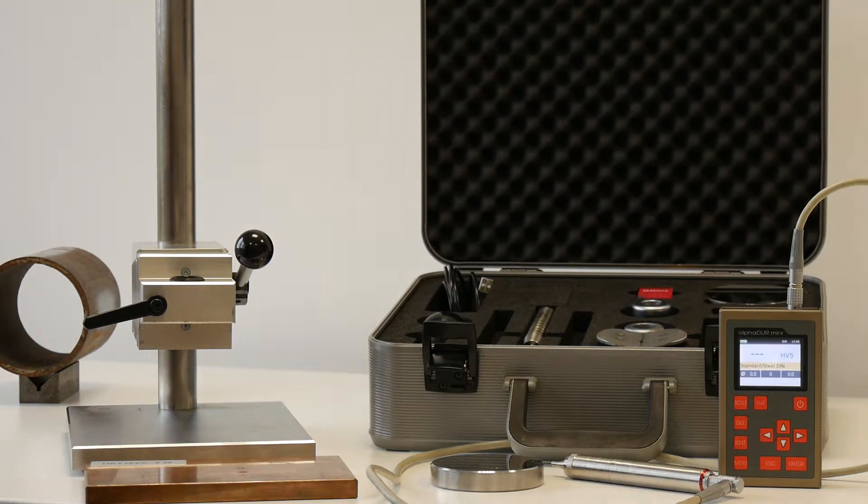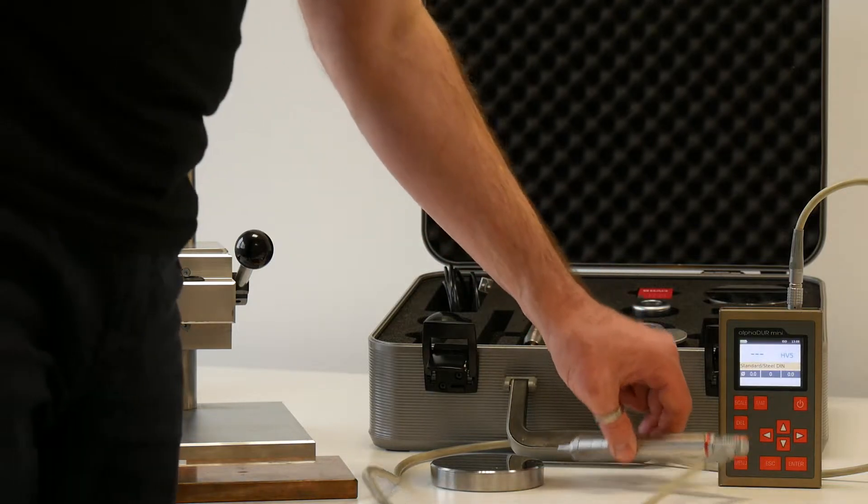The UCI hardness tester I-FIDA Mini contains a standard steel material calibration, which is traceable to measure most kinds of steel alloys.